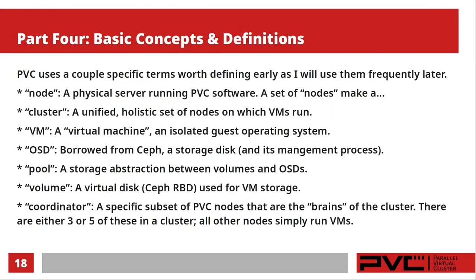Part four: definitions and concepts important for future videos in this series. The first term is a node. In PVC, we call a physical server running the PVC software a node. A set of nodes makes a cluster, and a PVC cluster is the unified, holistic set of nodes on which the VMs run. You look at PVC not as a set of hypervisors but as a unified cluster that happens to have sub-definitions inside it — the physical nodes. Next term is VM, or virtual machine: an isolated guest operating system.